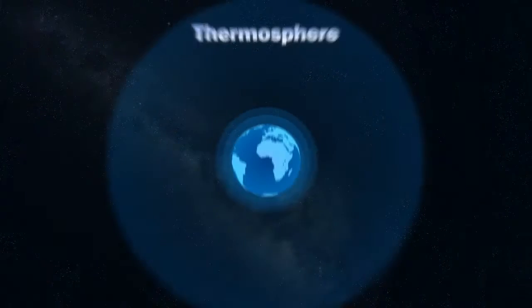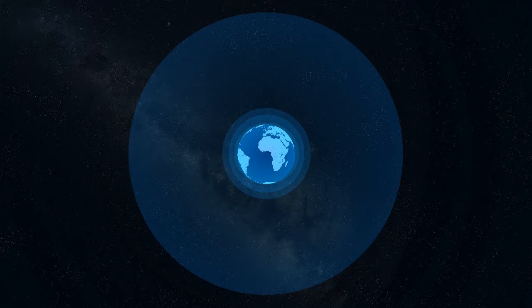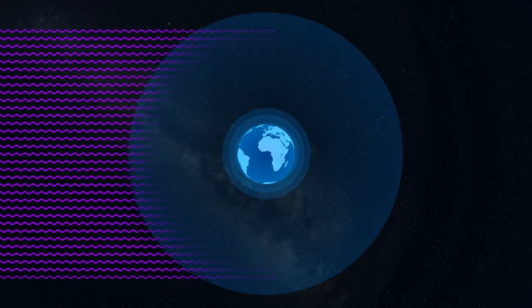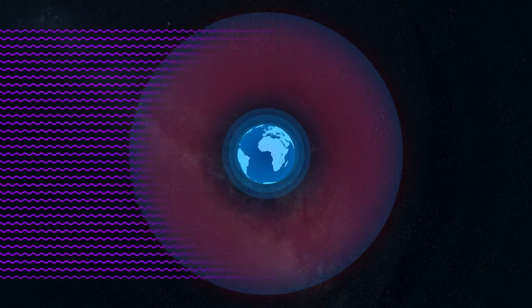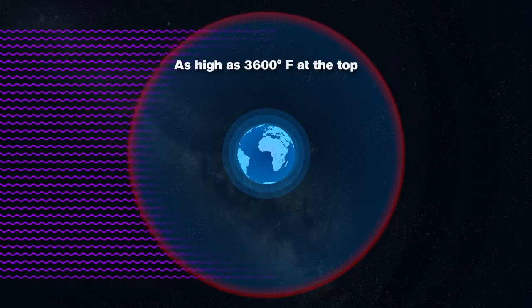The thermosphere is next and extends from 53 miles up to 375 miles above the Earth. Being one of the outermost layers, the air here gets bombarded with ultraviolet and x-ray radiation from the Sun, which in turn causes a large temperature increase as high as 3,600 degrees Fahrenheit at the top.